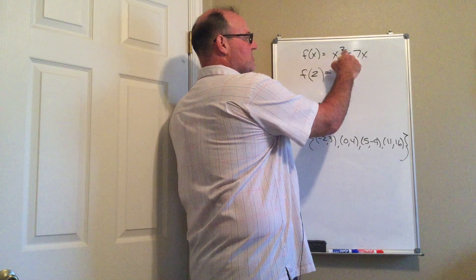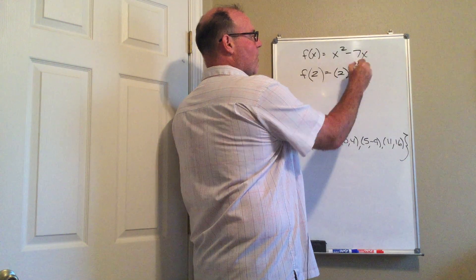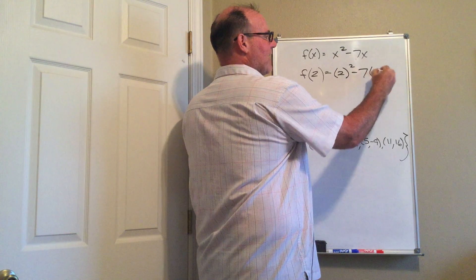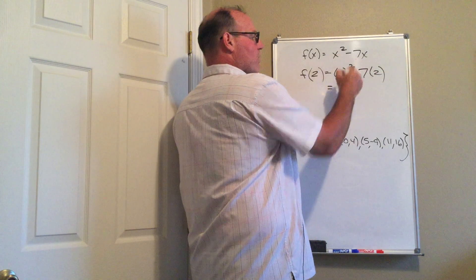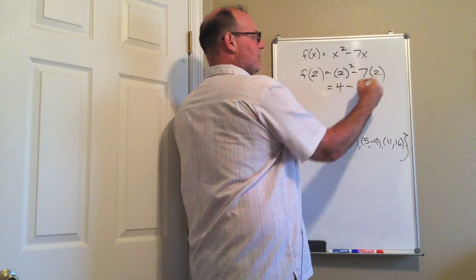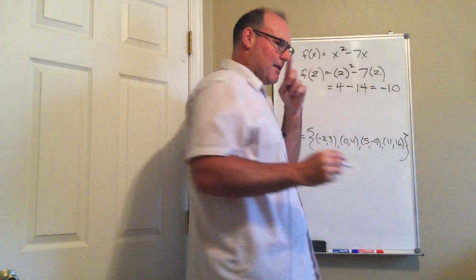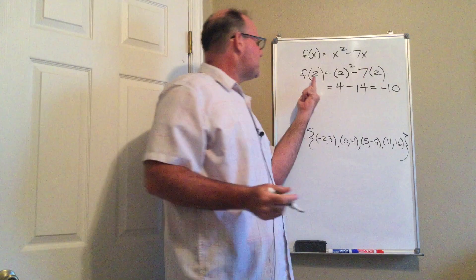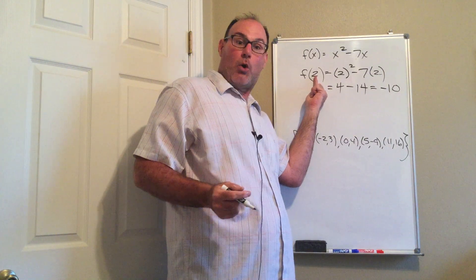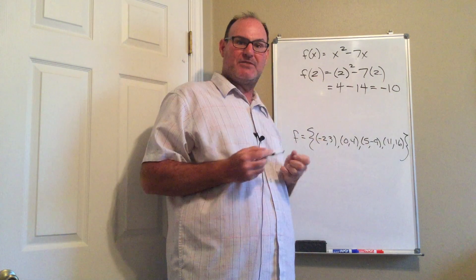So here I've got x squared, so that means I'm going to have 2 squared minus 7 times 2. 2 squared is 4, 7 times 2 is 14, and 4 minus 14 is negative 10. So what this is telling me is that the x value 2 to the corresponding y value is negative 10.